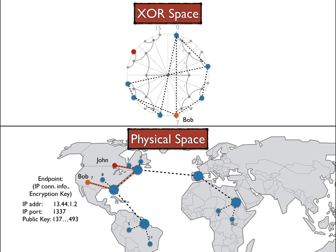Now that John has an ID in XOR space, he does exist in that space, but he has no connection to any other node, so he cannot participate in routing operations. John will use the connection he has to Bob to establish a connection with another node. We don't need to see the physical space anymore, so I'll just represent the secure channel between John and Bob as an additional link that is external to the network in XOR space.